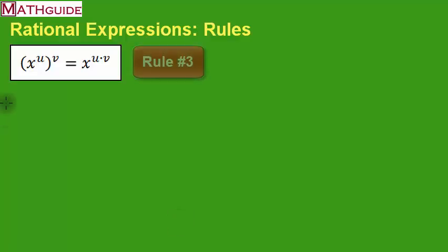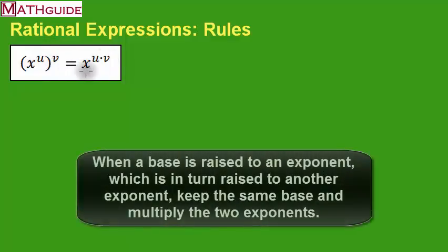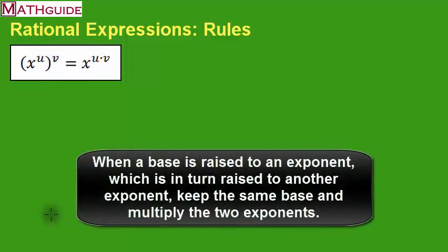Here we have rule number three. Rule number three says that if we have a base and it's being raised to a power, and in turn that is also being raised to a power, we simply keep the same base and multiply those two exponents together. Let's say we have x to the 3rd and it's being squared.